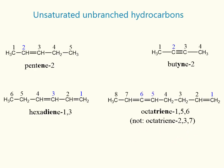The names of some unsaturated unbranched hydrocarbons are shown on the slide. Note the suffixes in these names. The suffix "-en-" is the suffix of alkenes — such compounds have one double bond. The suffix "-yn-" is the suffix of alkynes — such compounds contain one triple bond.